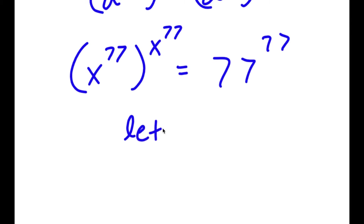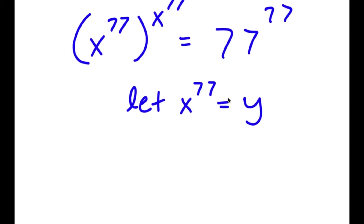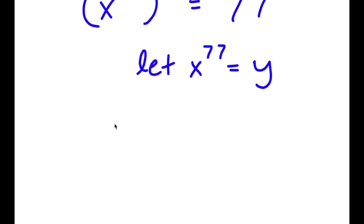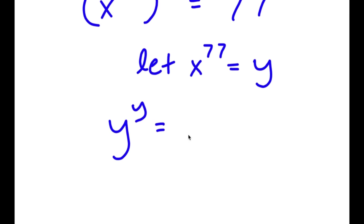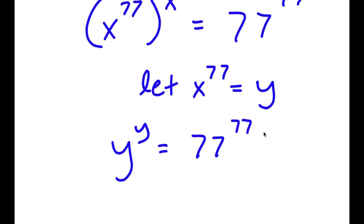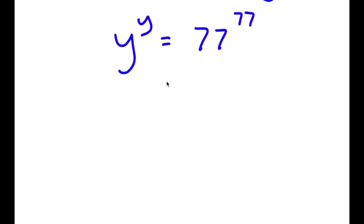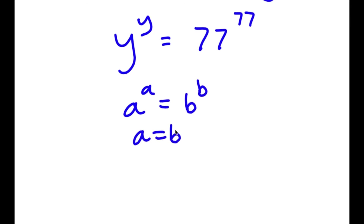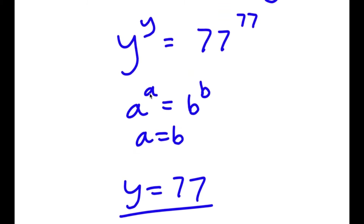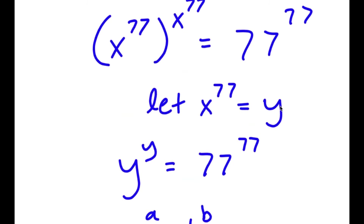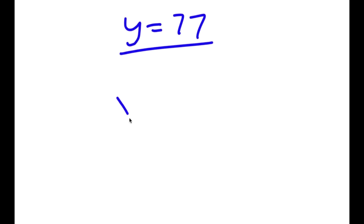I'm going to let x to the power of 77 equal the variable y. Substituting y for x to the power of 77, I get y to the power of y is equal to 77 to the power of 77. Since a to the power of a equals b to the power of b means a equals b, y equals 77. And since we let x to the power of 77 equal y, I now have x to the power of 77 is equal to 77.